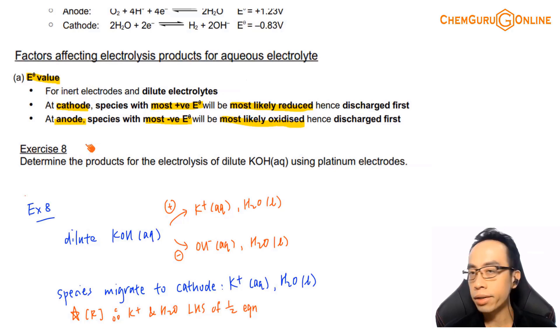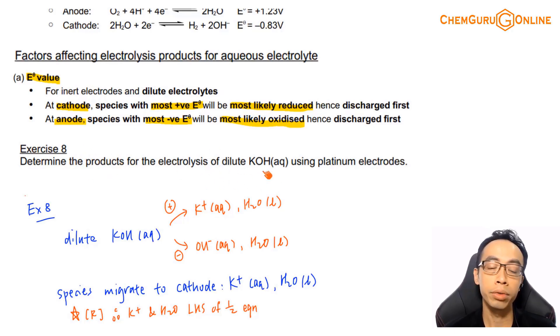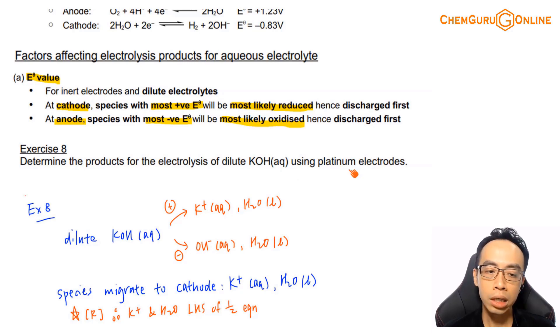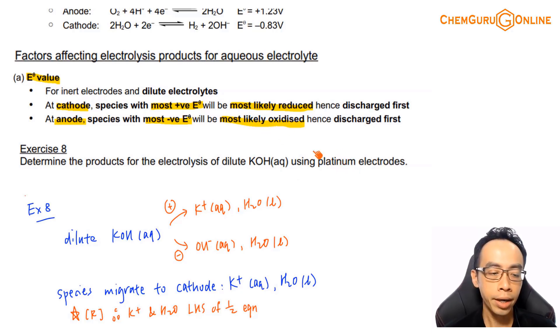Let's use exercise 8 as an example: determine products for electrolysis of dilute KOH aqueous solution using an inert electrode. If you see platinum, we know it's inert, so we can basically ignore it.